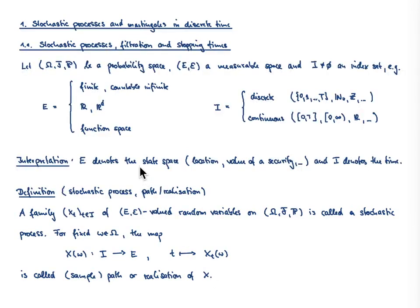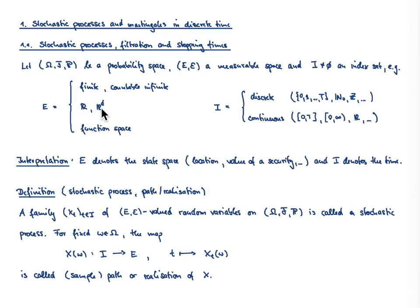There are various types of stochastic processes. In case the index set I is a finite set, a stochastic process is nothing else but a vector of random variables. If it is countably infinite, it is simply a sequence of random variables. It becomes more complicated when the index set is continuous. The state space also offers a huge variety of choices — it could be a finite or countably infinite set, real-valued, R^d-valued, or even function spaces.